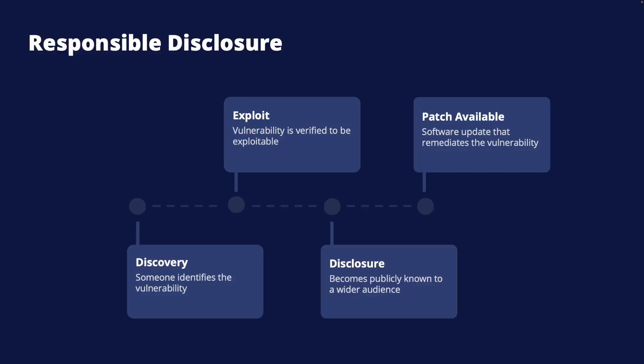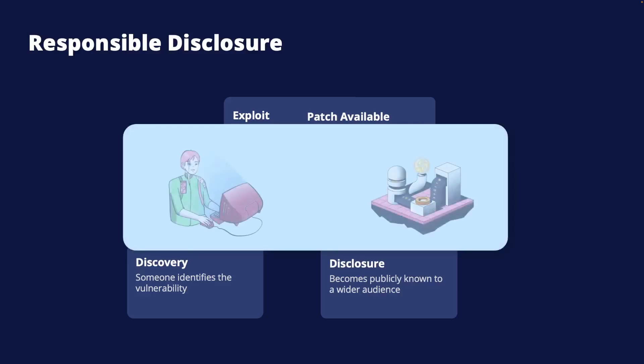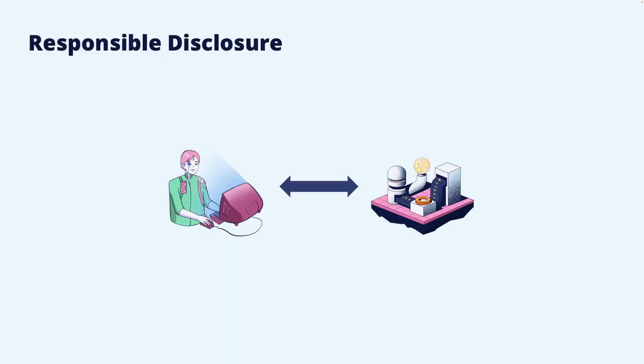Responsible disclosure is a process that allows a vulnerability to be reported to a vendor so that it can be patched before being disclosed to the wider audience. This process involves obligations and cooperation from both the researcher who discovers the vulnerability and the vendor. From the researcher's point of view, when a vulnerability is found, it should be reported to the vendor either directly or through a third party that facilitates the process.